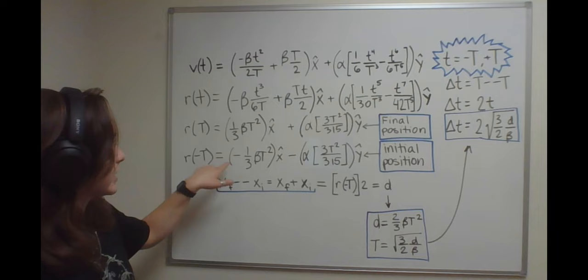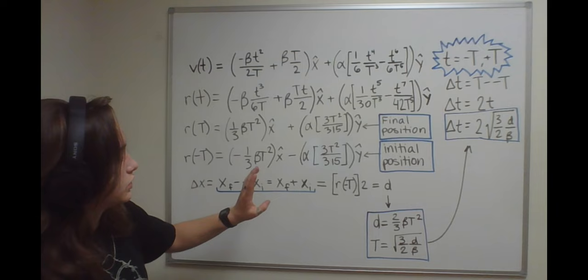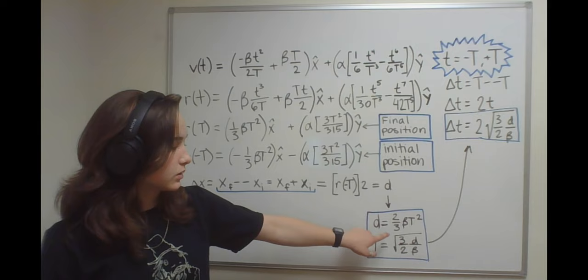If you account for that negative, x-final minus negative x-initial is just 2 times that x, which gives you distance. So distance equals 2/3 beta t squared.